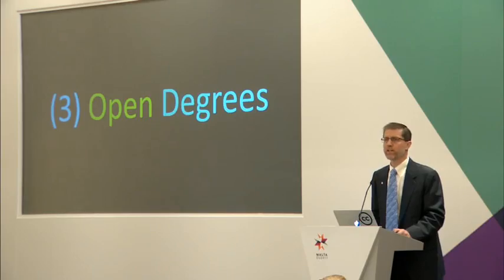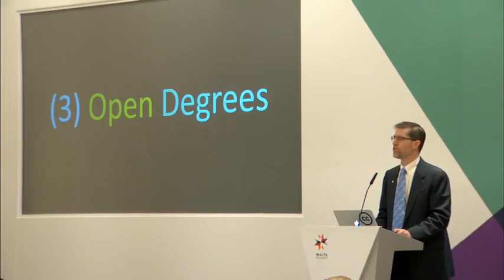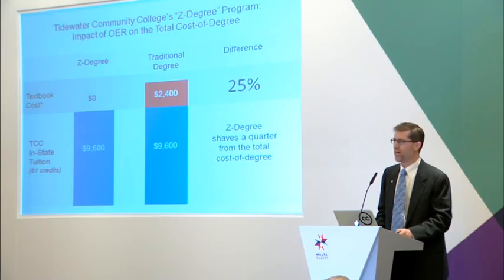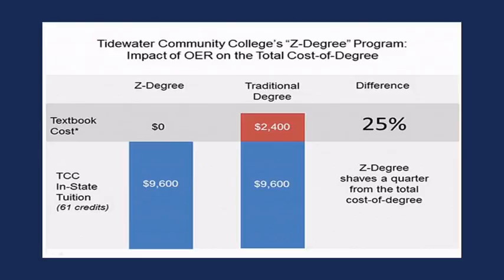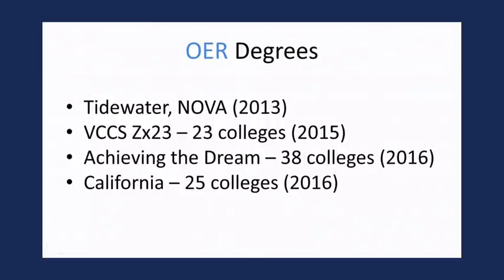Another trend is open degrees. Early on, faculty and students shared components — a video, a lecture, a curriculum, parts of courses. Then they shared whole courses. Then universities like MIT shared the entire university. This idea of sharing whole degrees is starting to take off. One example is a college that shared and cut 25% out of the cost of a degree by making all textbooks and instruction materials free. The California governor said, 'We think this is a good idea — here's $5 million, go build new degree programs where textbook costs are zero.'